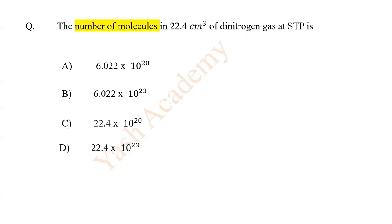The number of molecules in 22.4 cm³ of dinitrogen gas at STP is 6.022 × 10²⁰.